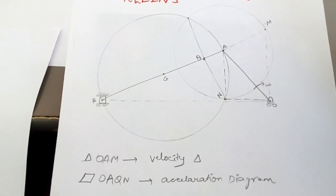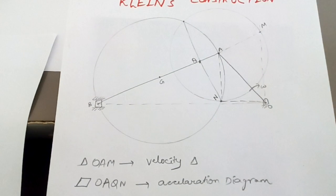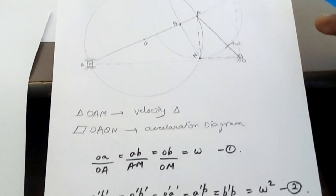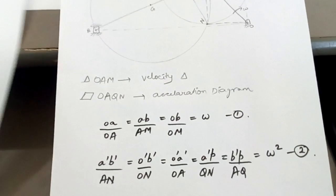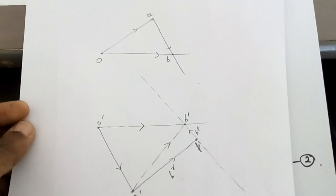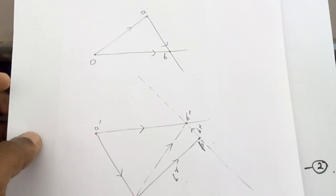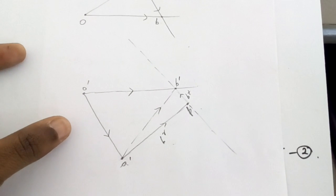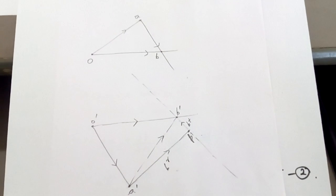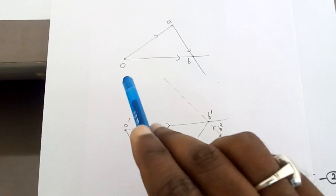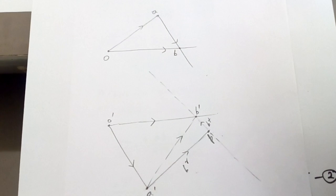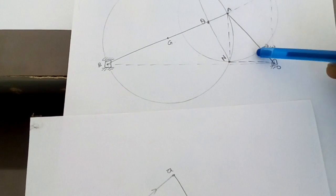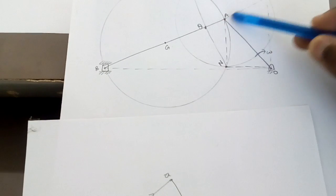Now, how can you solve the slider crank problem in very short time just by using Klien's construction? You have got these triangles, so you measure the dimensions. First let me show what the actual velocity and acceleration diagram of a slider crank mechanism looks like. The upper diagram is the velocity diagram and the lower diagram is the acceleration diagram. I have taken point O, then omega — the angular velocity — clockwise, so from O, point A would be at 90 degrees.